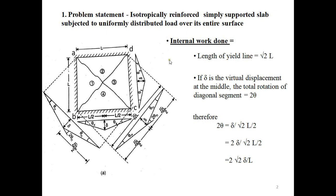Internal work done means the work done due to the moment, and external work done is the work done due to the load. The length of the yield line is √2·L. If delta is the virtual displacement at the middle, the total rotation of the diagonal segment is equal to 2·theta. Writing this out: 2·theta equals 2·theta·L.